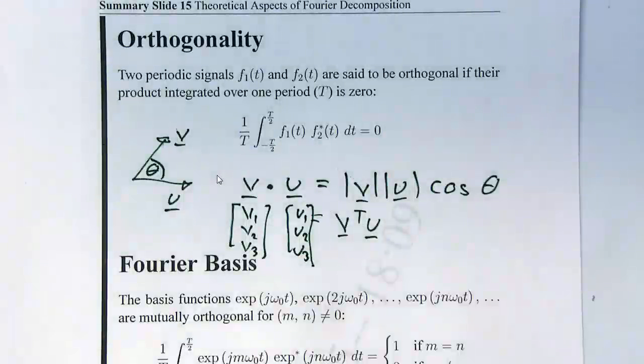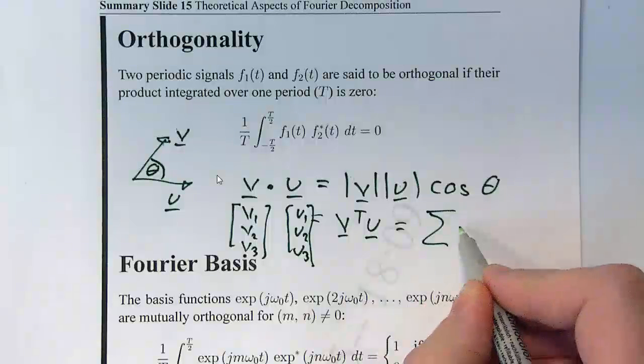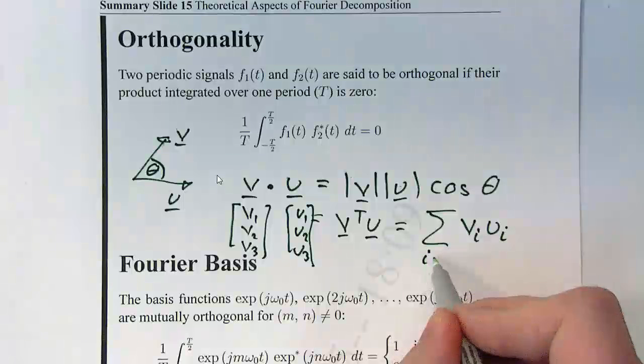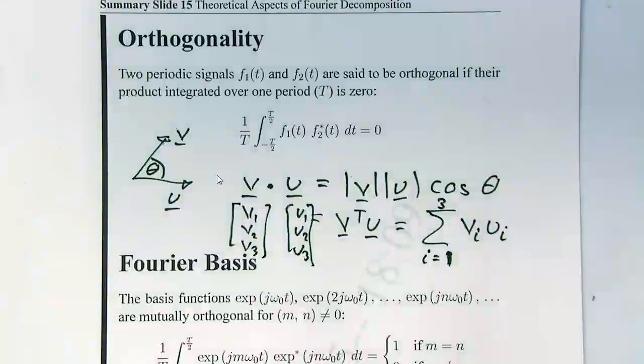So if v was a vector in three dimensional space, then you could write it as a column vector v1, v2, v3. And u, you could write as a vector u1, u2, u3. If you wrote that as two column vectors, then v transpose takes a column and makes it into a row. And when you multiply it out, this becomes the sum of the products of the individual elements, v_i times u_i. And in this case, that will be between i is one and three. And that's a dot product. So that is a very common form of working out the dot product, so the contribution of one vector in the direction of the other.